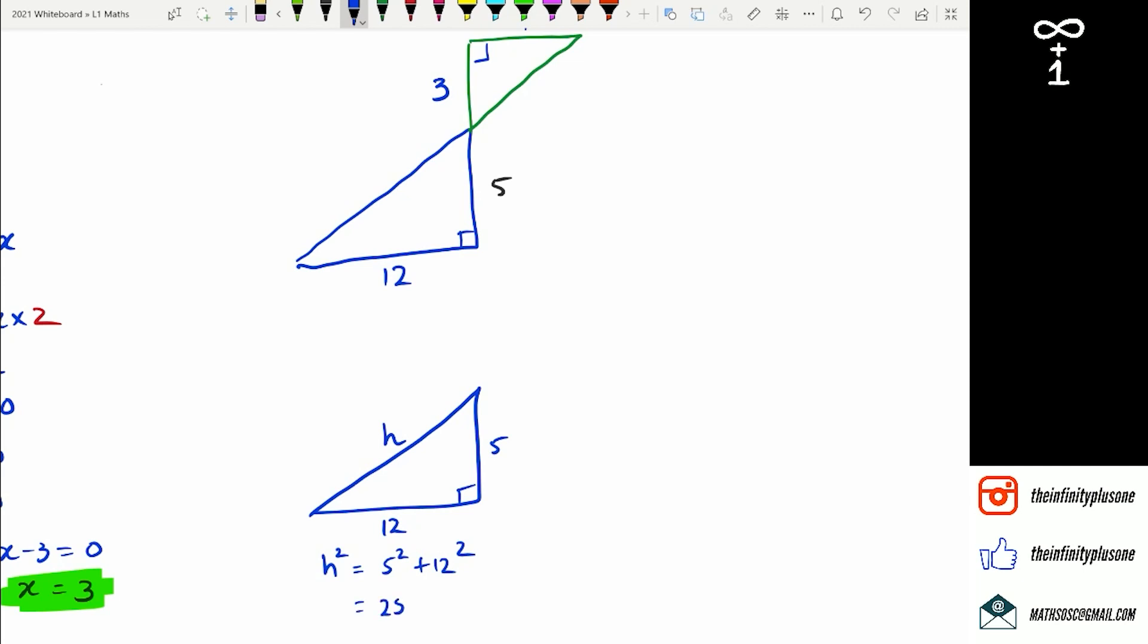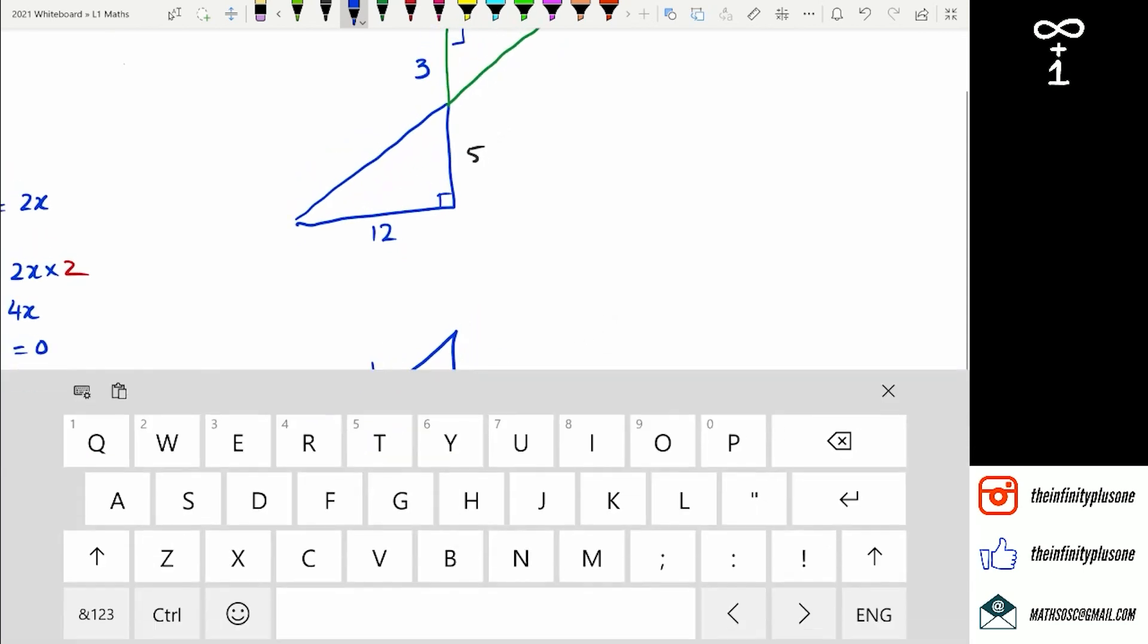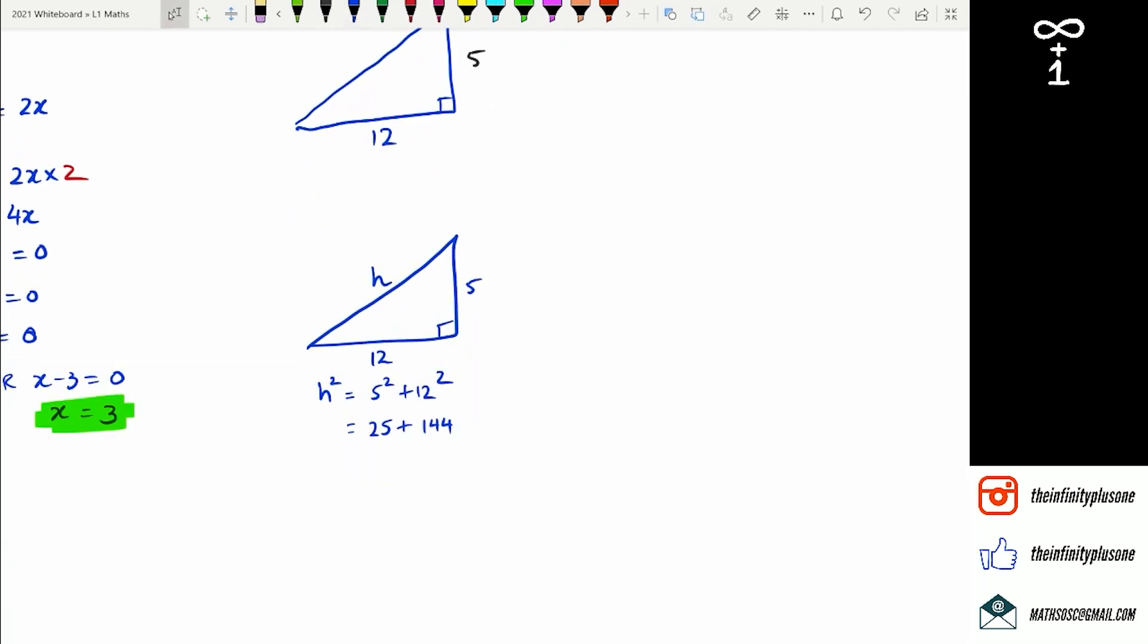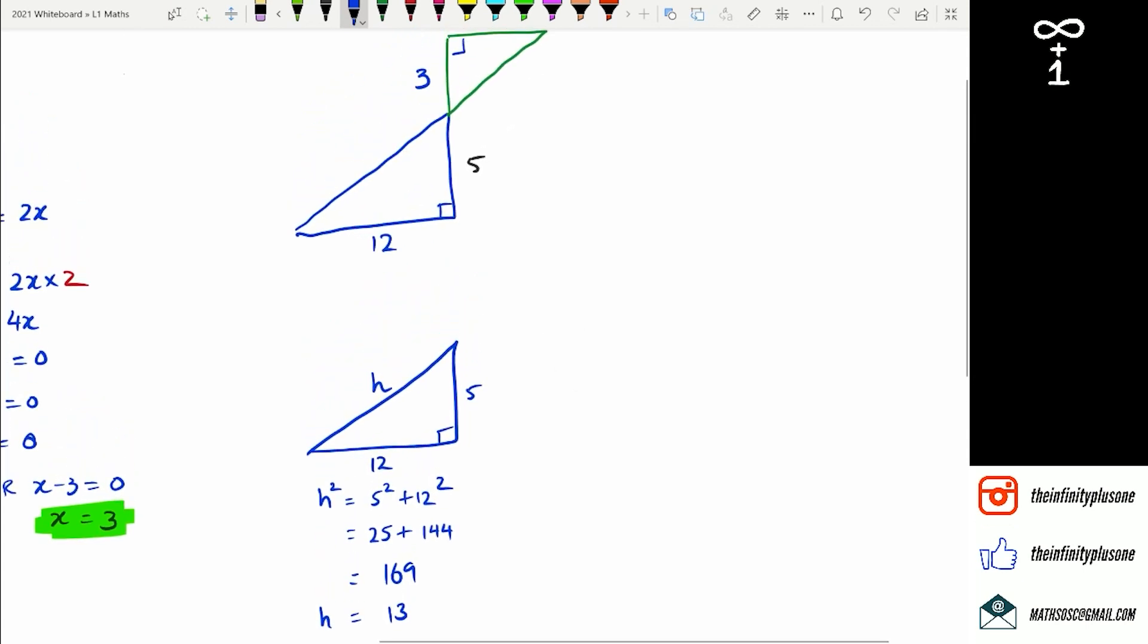You might be wondering why are we getting these kind of numbers in algebra when you don't have a calculator. It's just that if you've been doing Pythagorean, then these numbers should be familiar. So you're going to get h squared is 169 and then h equals 13.